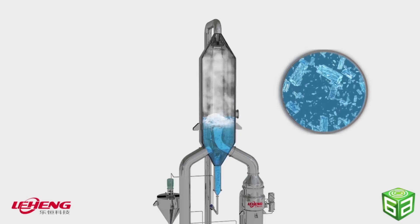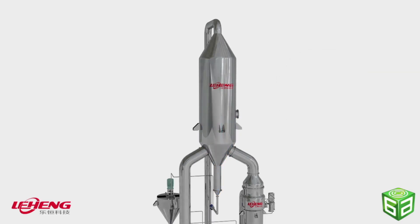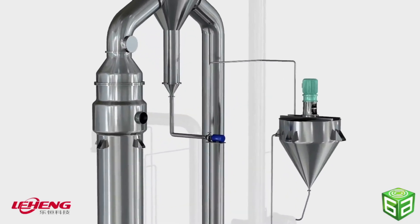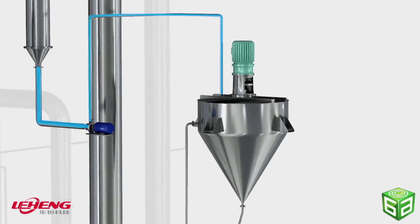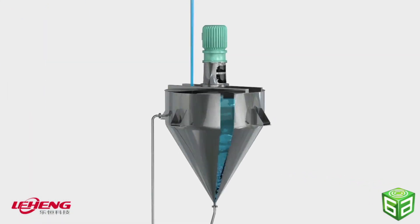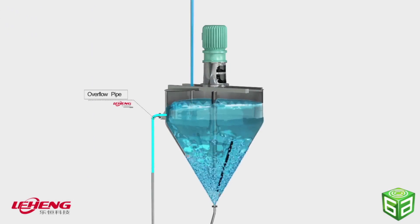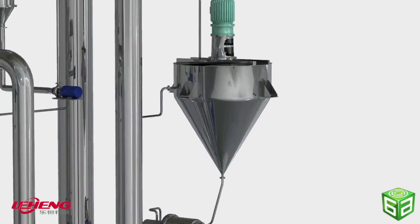Slurry will then be discharged to the thickener from the discharge outlet at the bottom of the crystallization separator. Slurry flows into the thickener through the liquid feeding groove, and clear fluid is discharged from the overflow pipe. The mixing propeller rotates at a constant speed, which helps to concentrate sediment before discharging to the centrifugal.